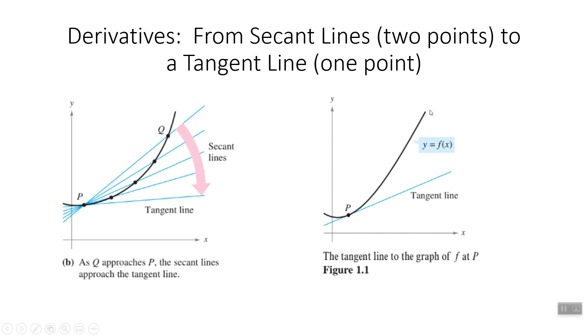Maybe the curve curls around somewhere else and crosses again, but we're just looking at this neighborhood here where the line only touches it once. It has the same slope as the curve has right there. So curves now have slopes.